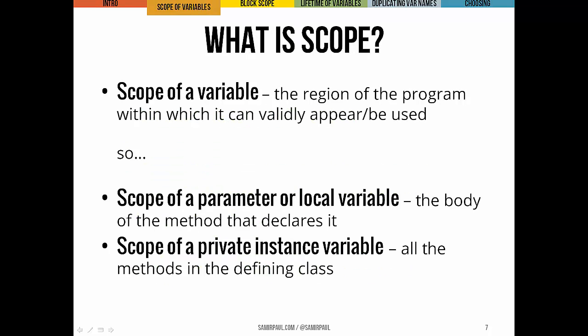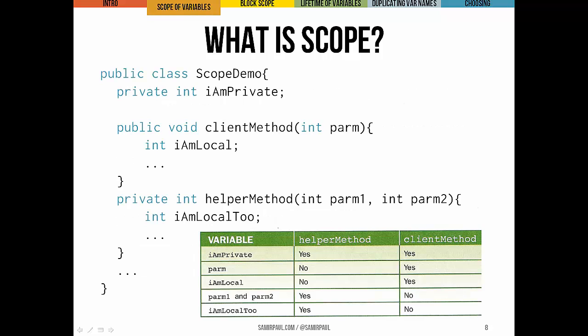This leads naturally to the idea of scope. The scope of a variable is the region in a program where we can validly use it in a line of code. The scope of a parameter or a local variable is just the method that declares it, and the scope of a private instance variable is any method in the class.